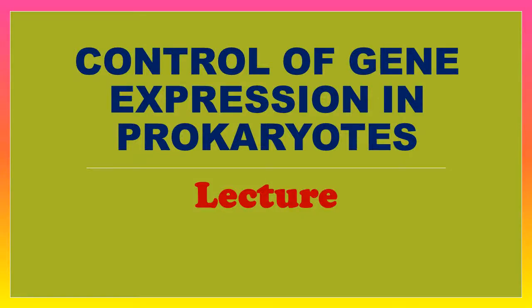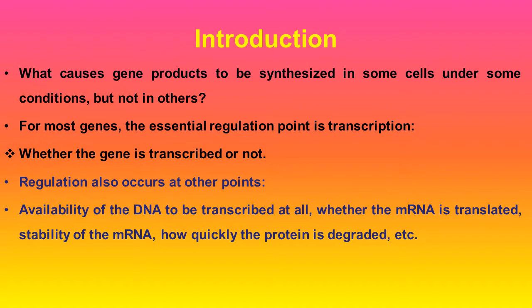Today we are going to talk about control of gene expression in prokaryotes — how gene regulation occurs in prokaryotes. Gene regulation means the process of switching genes on and off. A key question arises: what causes some gene products to be synthesized in some cells under some conditions, but not in others? For most genes, the essential regulation point is transcription — whether the gene is transcribed or not.